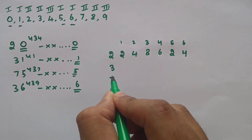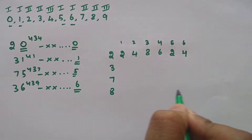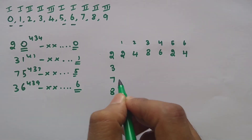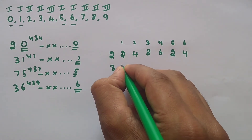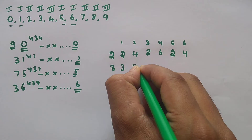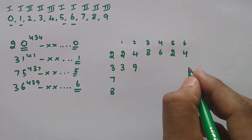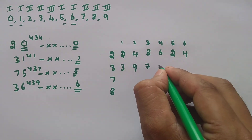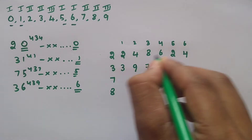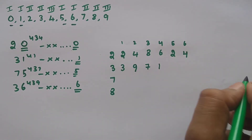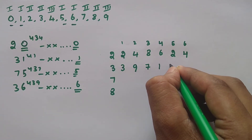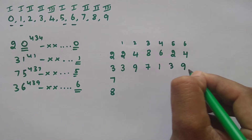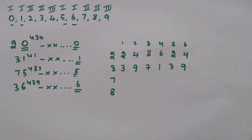Similarly for 3, 7, and 8 the cyclicity is also 4. For 3: 3 power 1 is 3, 3 squared ends in 9, 3 cubed is 27 ending in 7, and 3 power 4 is 81 ending in 1. Then it repeats: 3, 9, 7, 1 — 3, 9, 7, 1 — and so on. For 7: 7 power 1 ends in 7, 7 squared is 49, 7 cubed is 343, and for 7 power 4 you only need the last digit of 343 multiplied by 7: 3 × 7 = 21, so last digit is 1. The cycle is 7, 9, 3, 1.